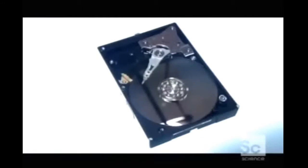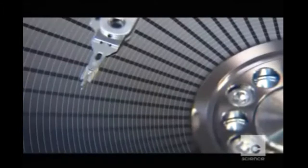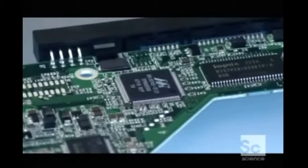During manufacture, up to 200,000 of these tracks are created on the disk. Each track is divided into sectors. A map of the tracks and sectors in the printed circuit board tells the heads exactly where to read or write information.